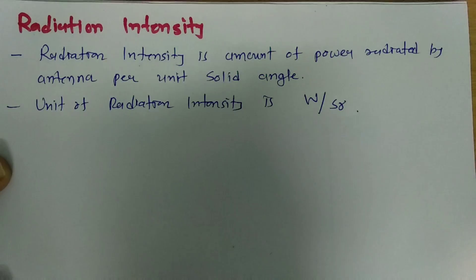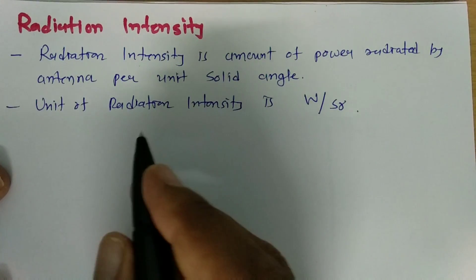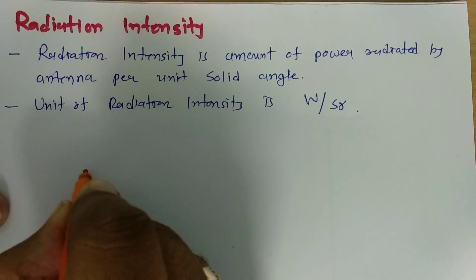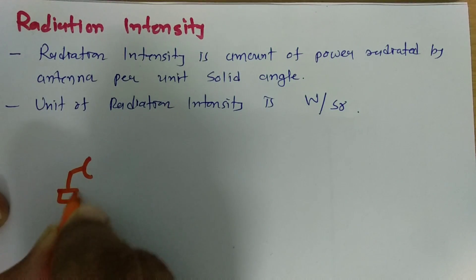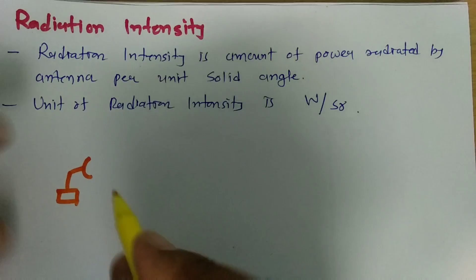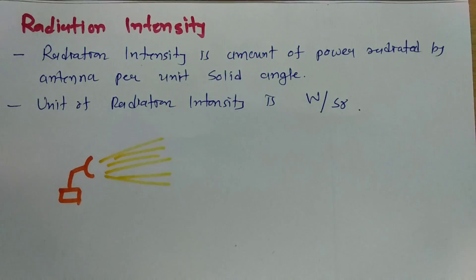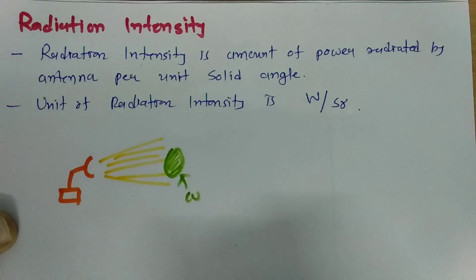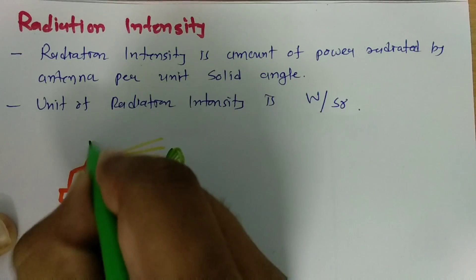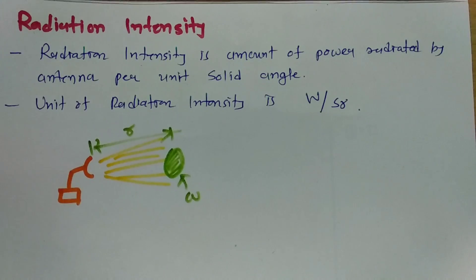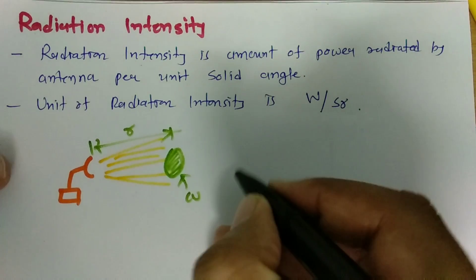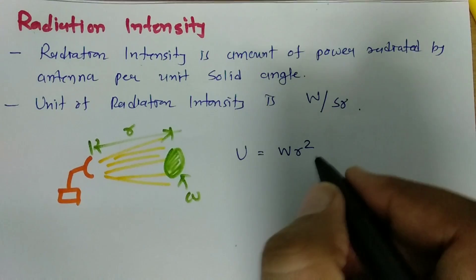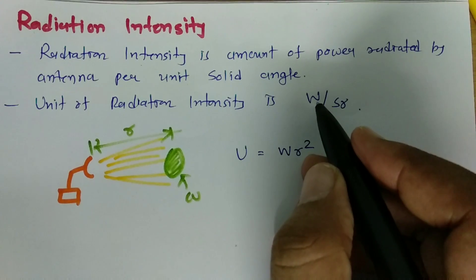Now, how to calculate radiation intensity. If we have power density, then based on power density we can calculate radiation intensity. For example, I have an antenna here with a transmitter, and this antenna is radiating in a direction. Here I have a power density W and the distance of this area is R. Based on that, I can calculate radiation intensity U as power density multiplied by R squared. Power density into the square of the distance gives radiation intensity in watt per steradian.